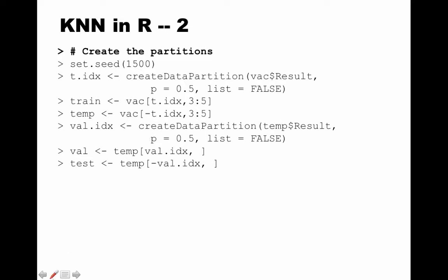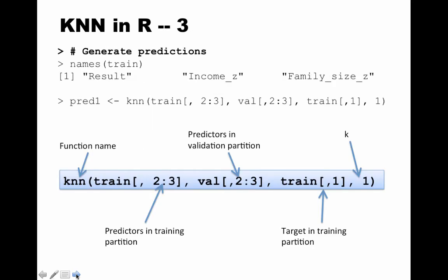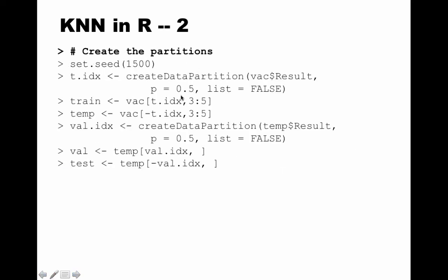We want only the third, fourth, and fifth columns: the third column is 'result', and the fourth and fifth are the normalized predictor values. We could have kept all columns and selected later, but here we subset explicitly. After creating the training partition, what's left is 50 percent of the original data: vac[-t.idx, 3:5]. If we originally had 30 rows, 15 go to train and the remaining 15 sit in temp.